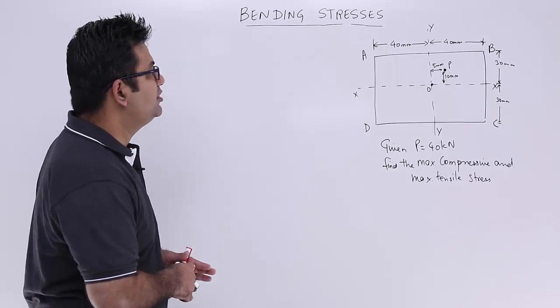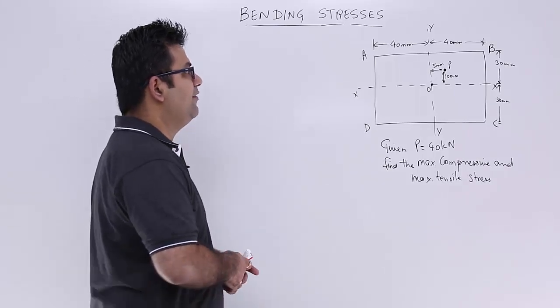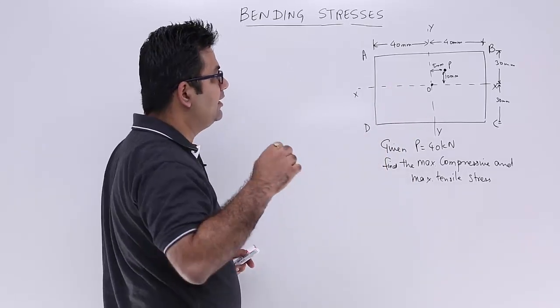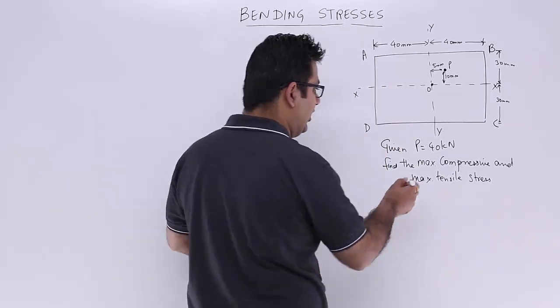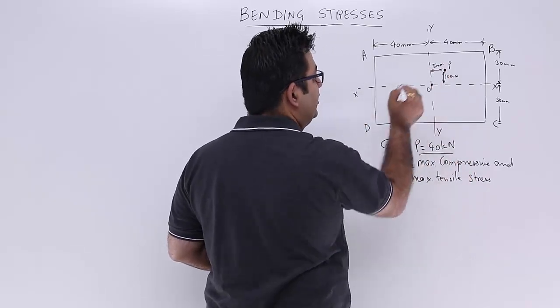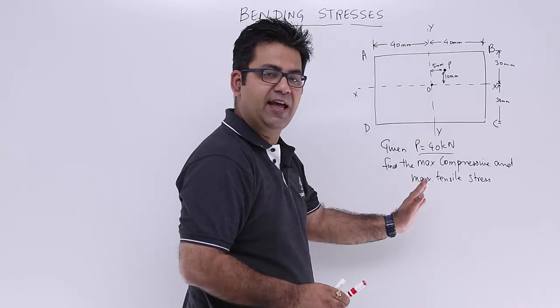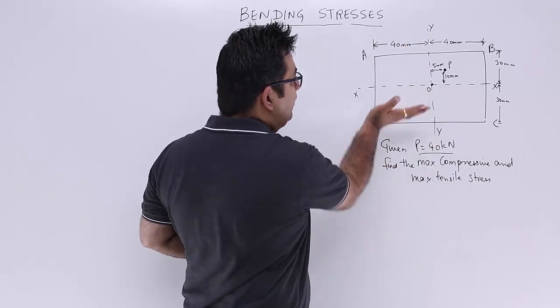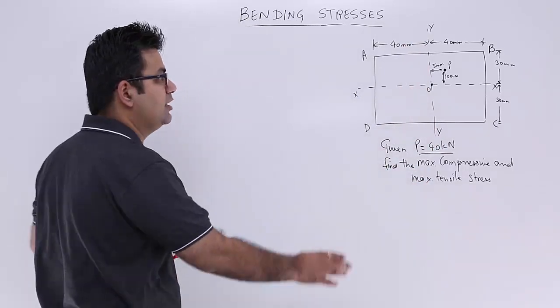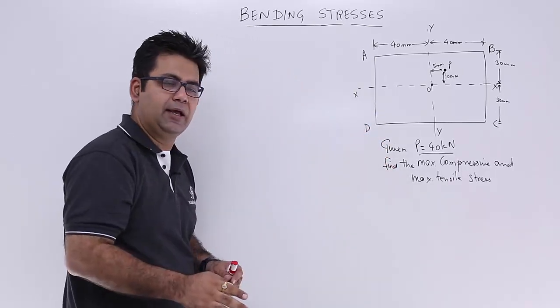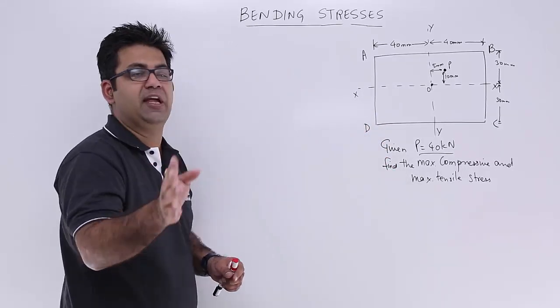Now let's look at a question. The question says you have a cross section of a beam in which you have the eccentric load of 40 kN acting at this point, which is at 5 mm from the yy axis and 10 mm from the xx axis. So this is a condition wherein the load is acting eccentrically to both axes.